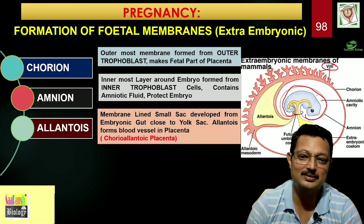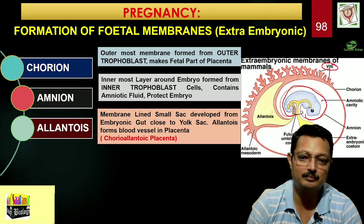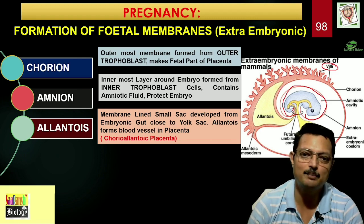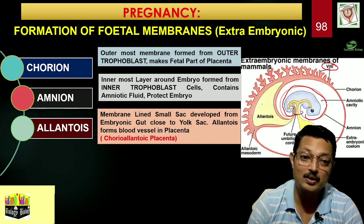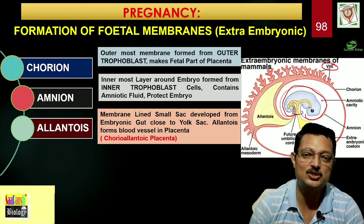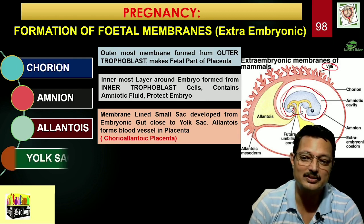Then comes the allantois, which develops from the embryonic gut. It forms the blood vessels in the placenta and is closely associated with the uterine tissue through interdigitation. Because of this close association of the chorion and allantois with the placenta, the human placenta is called a chorio-allantoic placenta — this is frequently asked in exams. The yolk sac is a membrane-lined sac formed from endoderm. It contains clear fluid in humans, and the hypoblast cells cover the blastocoel to form it. It is involved in forming embryonic blood corpuscles.